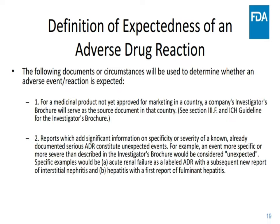Specific examples would be acute renal failure as a labeled adverse drug reaction with a subsequent new report of interstitial nephritis, or hepatitis with a report of fulminant hepatitis. Acute renal failure is a very broad term, but if you receive a report of interstitial nephritis, that's a much more specific term — that becomes unexpected. Similarly, hepatitis can be mild, moderate, or severe, but if you receive a new report of fulminant or very severe hepatitis, that becomes unexpected because it is more severe than what's in the investigator brochure.